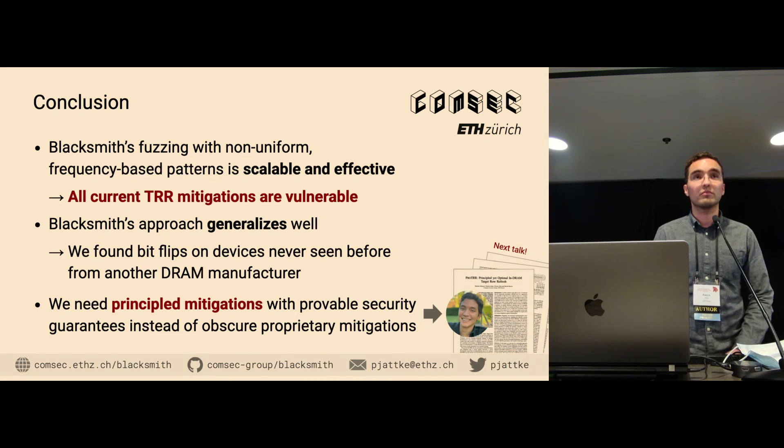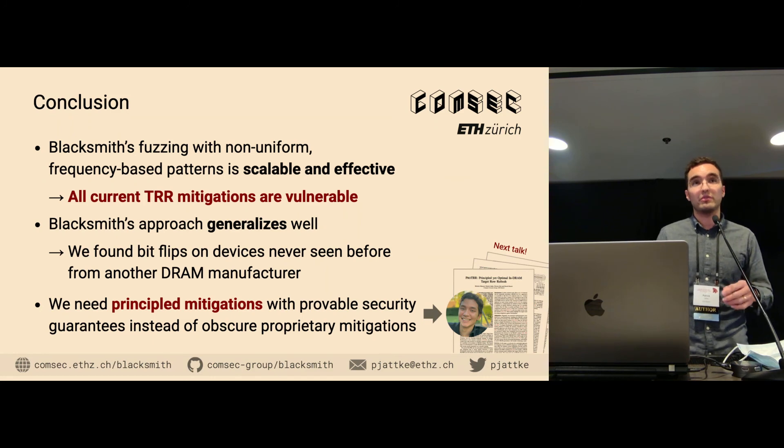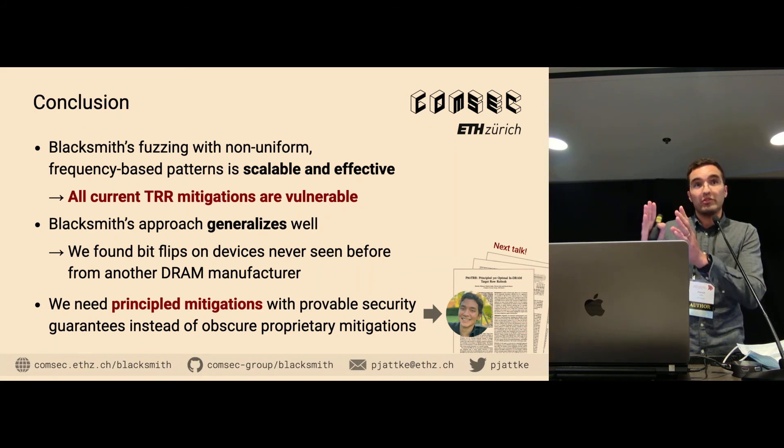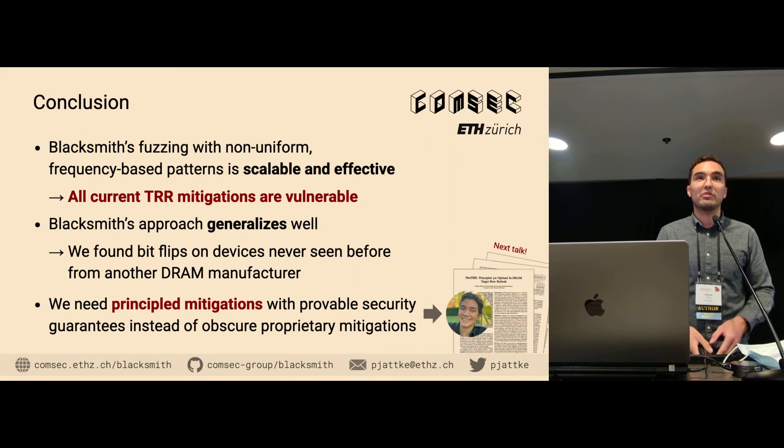So I have one more question. Blacksmith requires a large number of things to be maintained in terms of timing. Like, if you want to carry out this attack from JavaScript, will it be practical enough to keep track of so many timing parameters? Like, you have to get them correct, right? Yeah, but we use side channels for that. So basically, you only put into Blacksmith the number of activations that you can do. You can determine that with the side channel between two consecutive refreshes. And then Blacksmith generates a pattern that works with that value. And during execution, you again use a side channel to detect when the refresh happens. So they are always aligned with the refreshes. It should be possible. I think flushing in the accesses from the cache would be the major challenge to realize it in JavaScript. Yeah. Thank you. You're welcome.